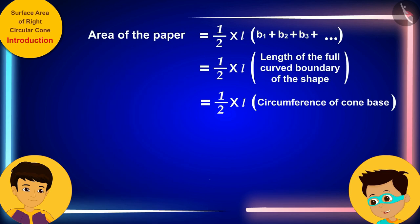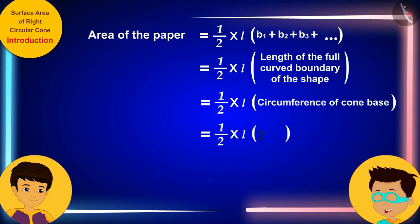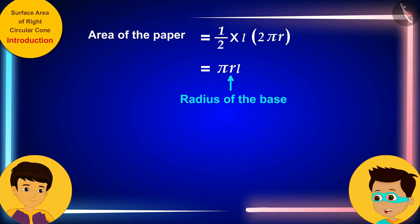And as we know, the circumference of this base will be 2πr, where r is the radius of the base.